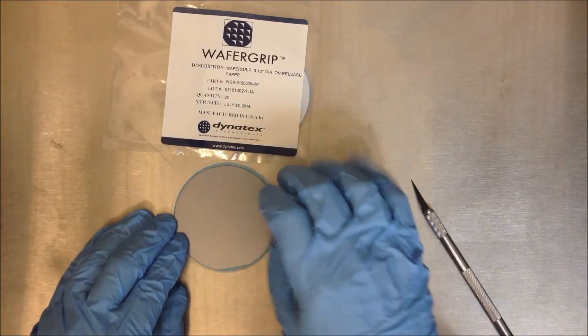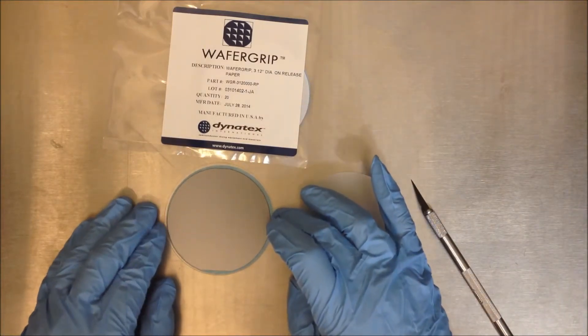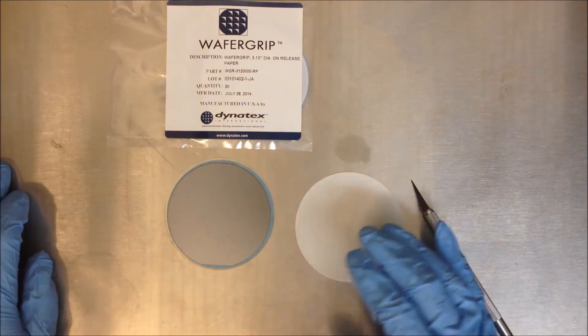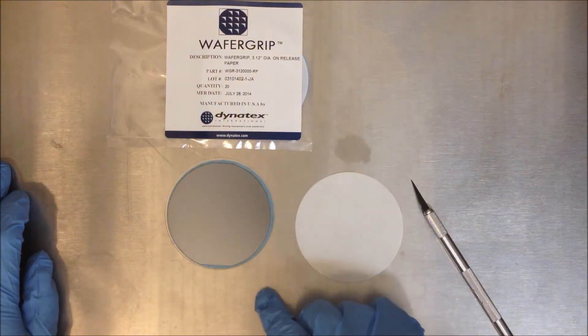Now you will see that we have wafer grip all the way around the wafer. This is a good practice, especially for the wafer thinning process, because if you don't have a good bond all the way around to the very edge, you will get chipping of the wafer.